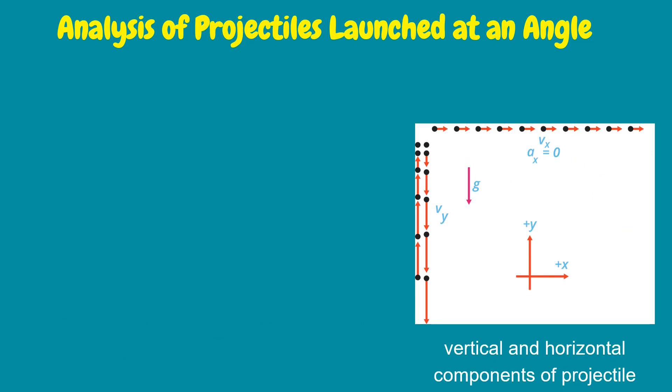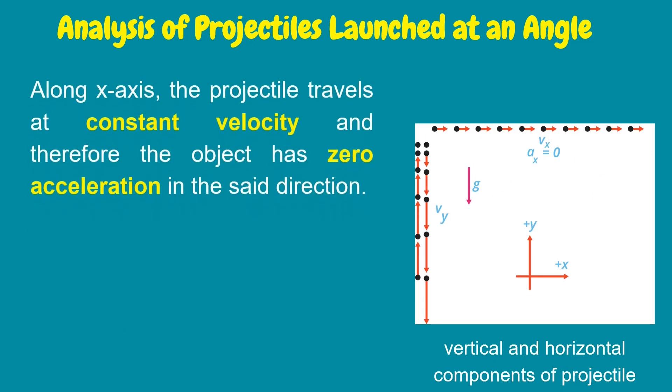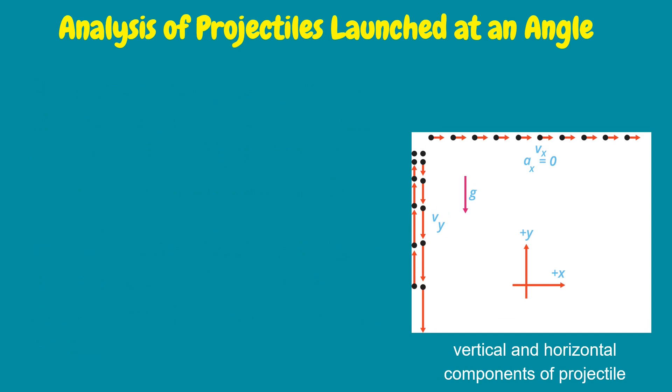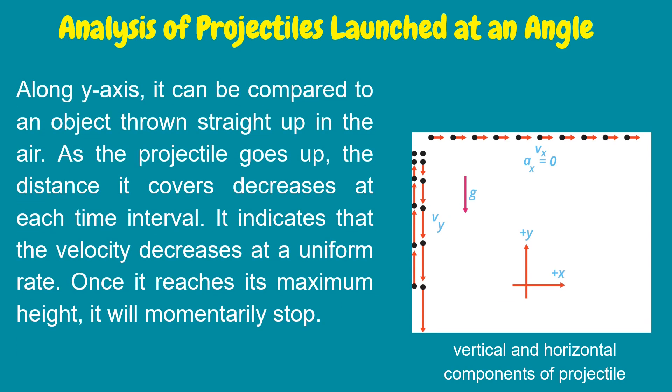Analysis of projectiles launched at an angle: Along the x-axis, the projectile travels at constant velocity and therefore the object has zero acceleration in that direction. This constant horizontal velocity is present even if the projectile already reaches its maximum height. Along the y-axis, it can be compared to an object thrown straight up in the air. As the projectile goes up, the distance it covers decreases at each time interval.